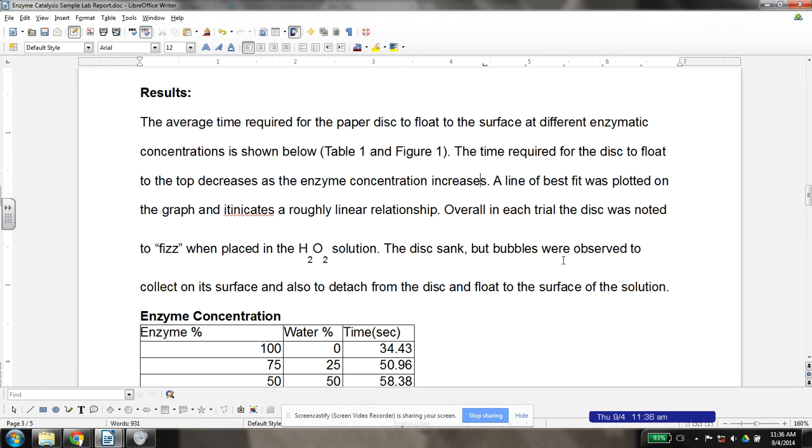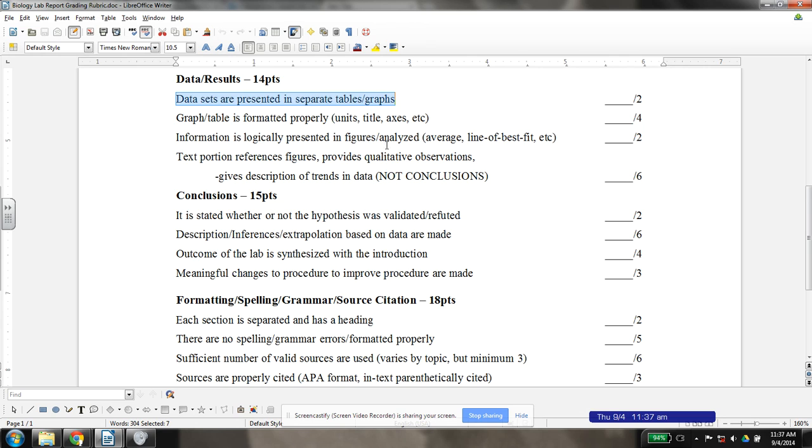You could also note your, or should also note, your qualitative observations. So remember, quantitative versus qualitative. Qualitative are things that you really can't put a number on, whereas quantitative are. So time measurements for how long it took this piece of paper to float, that would be a quantitative measurement. Those things are pretty often included.